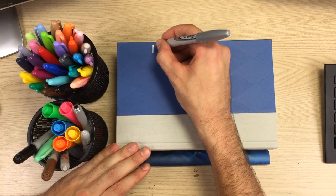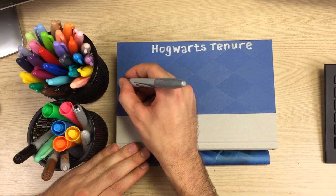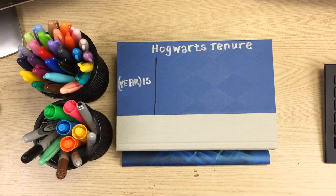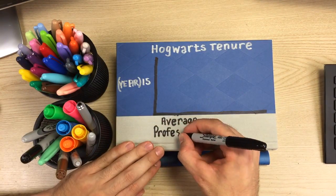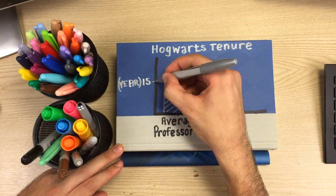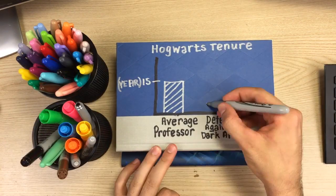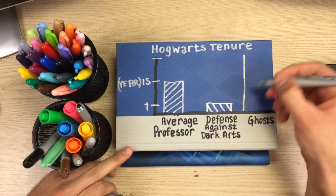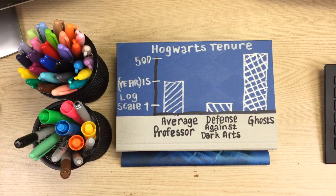Part of Umbridge's inquisition into the school revealed that the average professor at Hogwarts seemed to have been there about 15 years. Contrast that, of course, to the Defense Against the Arts teacher, who on average has been there less than one year. By the way, the y-axis on this particular graph is not drawn at linear scale, but at log scale.